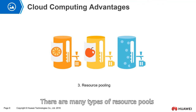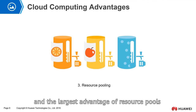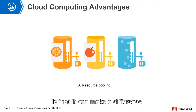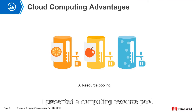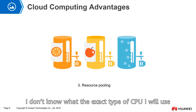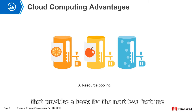There are many types of resource pools in cloud computing, such as computing resource pools, network resource pools, and storage resource pools. The largest advantage of resource pools is that they can abstract the underlying hardware. For example, a cloud computing resource pool may contain CPU and memory, but you don't need to know exactly which specific CPU you are using. The resource pool is also a very important feature that provides the basis for the next two features.